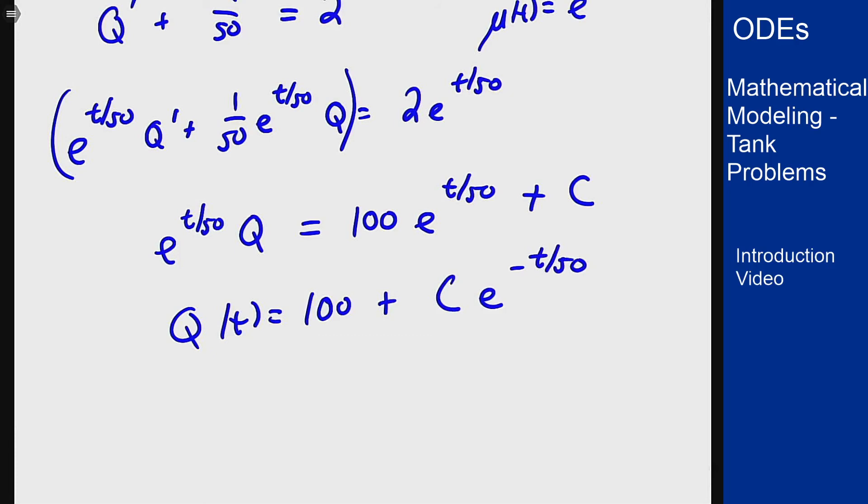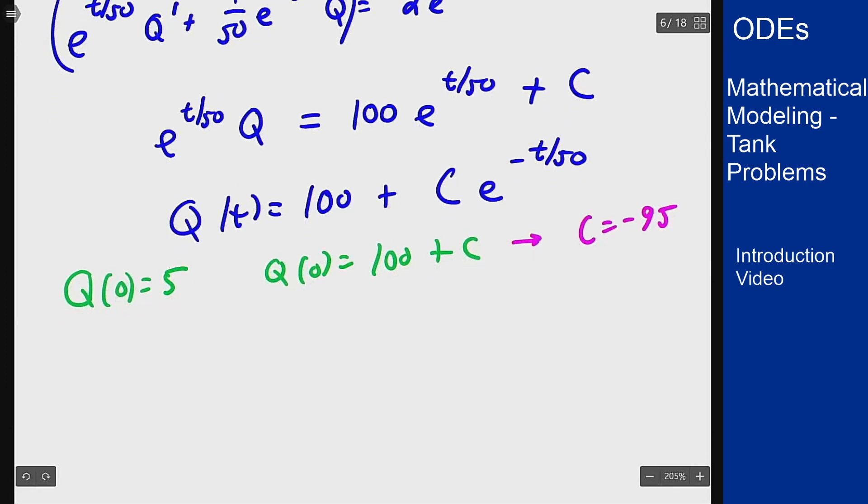Now to actually solve this out, I want to figure out the value of C that I need. I know that Q(0) should be 5 and Q(0) = 100 + C which tells me that C is negative 95. So the final answer is Q(t) = 100 - 95e^(-t/50).